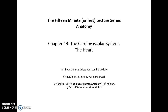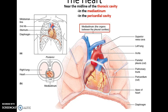This is the 15 minute or less lecture series, anatomy chapter thirteen: the cardiovascular system, the heart. The heart is found in the thoracic cavity approximately along the midline, in the mediastinum, found between the lungs. The heart is also in its own cavity called the pericardial cavity, formed by the pericardium.